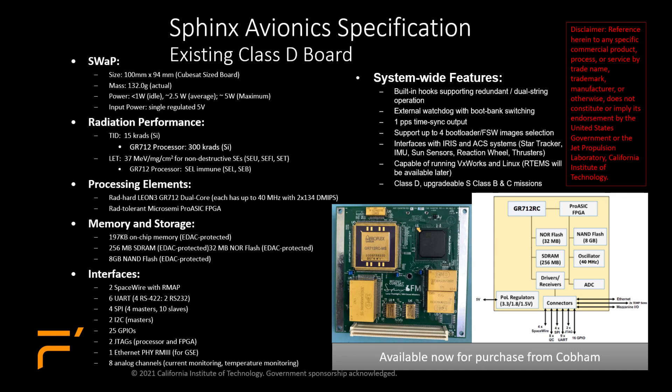We wanted to keep the power really low: 1 watt idle, about 2.5 watt average, or 5 watt max on the board. Based on the GR712, we added NOR Flash for storing flight software images — 32 megabytes of that — 256 MB of SDRAM, and 8 gigabytes of NAND Flash for storing science data. It's rad hard; the GR712 processor is rated at 300 kilorad, and the board itself is rated at 15 kilorad because of some of the parts.